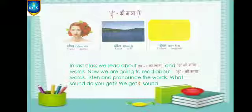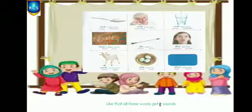See the next picture. Peela. Eee — what sound do you get? We hear Eee sound. Peela — Eee sound. What sound do you hear? Eee sound. So, these are called Eee key matra words. There are some other words also.